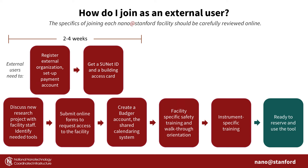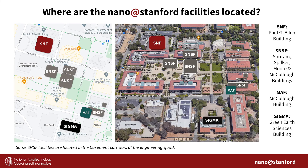For external users, the onboarding process is longer, as there are extra steps to register your organization, set up a payment processing account, and get the appropriate Stanford credentials. The Nano at Stanford shared facilities are found in the engineering quad. SNF is housed entirely within the Allen building, while SNSF is split between the Sriram, Spilker, Moore, and McCullough buildings. MAF is in McCullough while SGMA is in Green Earth Sciences.